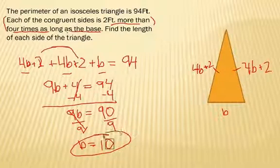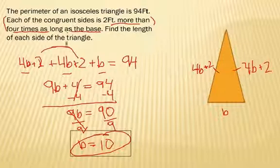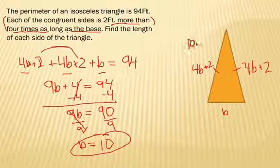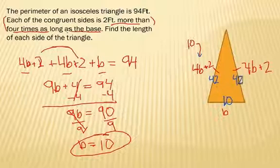Now, we want to reread the question and make sure. Find the length of each side of the triangle. Well, the base is going to be 10. And if I put 10 where the Bs are in each of the legs, 4 times 10 is 40. 40 plus 2 is 42. I'm going to change colors. Let's do a quick double check here. So, if the base is 10 and this leg is 42, this other leg is 42. When you add those together, do you get 94? Yes, you do.